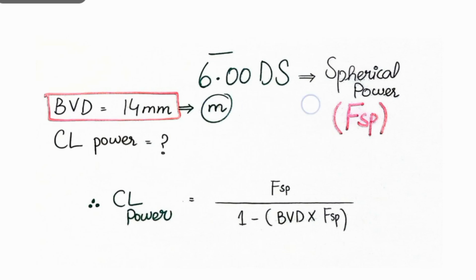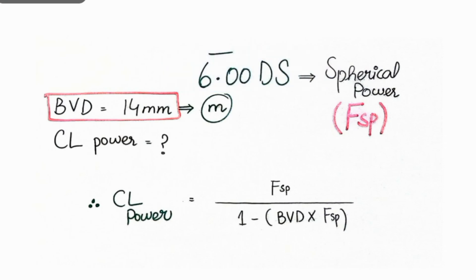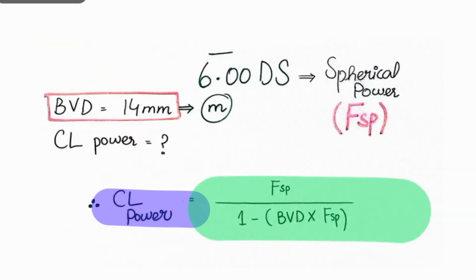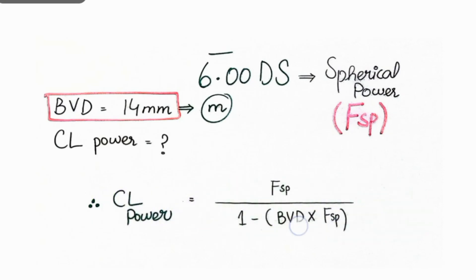So if a power is minus 6 diopters, which is a spherical power, back vertex distance is very important to consider while converting the spherical prescription into the contact lens prescription. Back vertex distance is very important, and here we are doing back vertex distance compensation. The formula is: contact lens power equals spherical power divided by one minus back vertex distance multiplied by the spherical power.